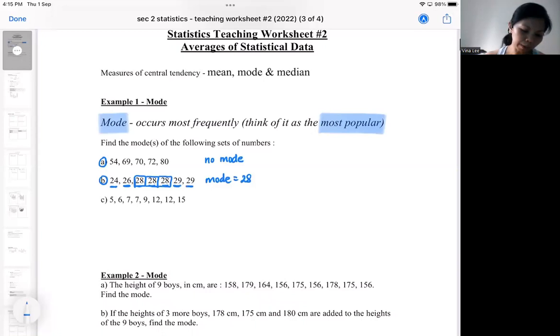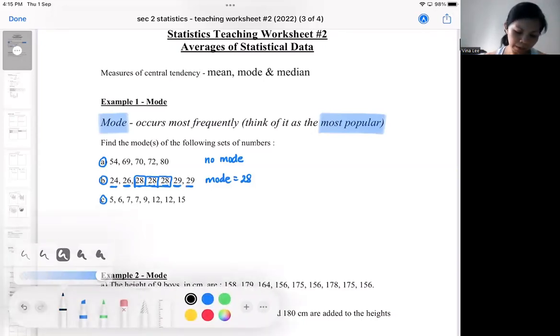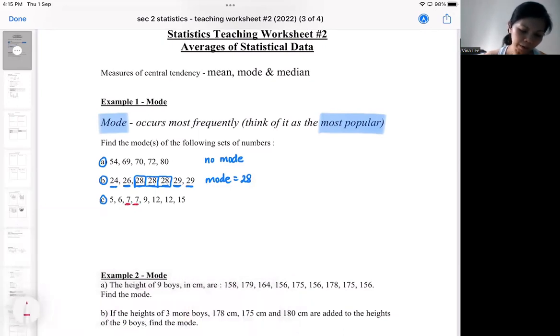If you look at part C, if you look at the data, it seems like seven is popular because it appears twice. But then, 12 also appears twice. So this is something what we'll call bimodal. That means we got double mode. We got two modes.